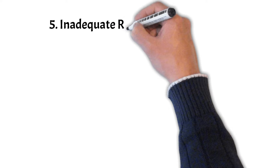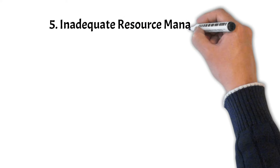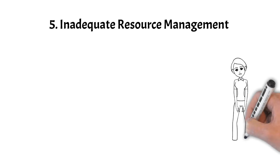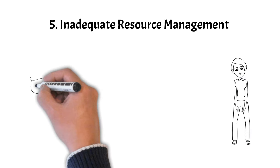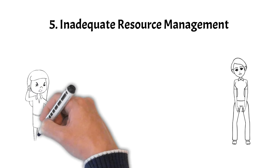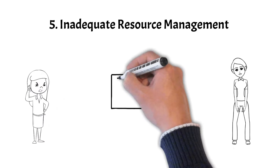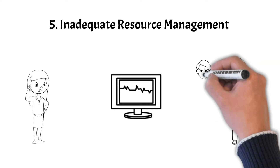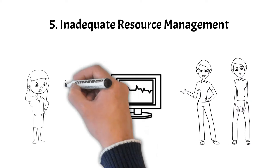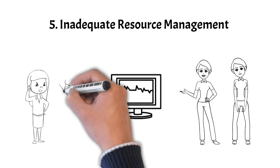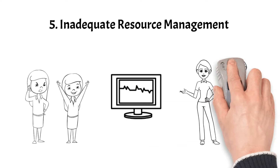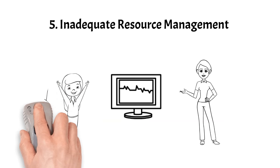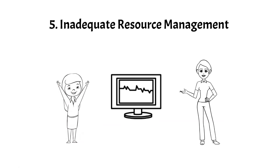Pitfall 5 concerns resource management. Properly managing resources, including human resources, time, and materials, is essential for project success. Misallocating resources or underestimating their requirements can lead to bottlenecks, delays, and compromised project quality. To avoid this pitfall, thoroughly assess resource needs, optimize resource allocation, and ensure that the team has the necessary skills, support, and capacity to accomplish project objectives efficiently.